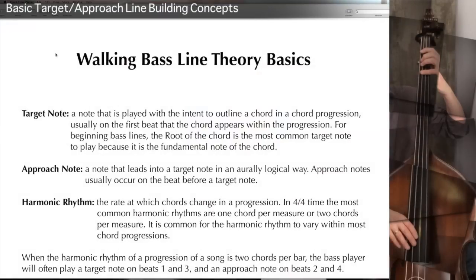A target note is a note played with the intent to outline a chord in a chord progression, usually on the first beat that the chord appears within the progression. For beginning bass lines, the root of the chord is the most common target note to play because it's the fundamental note of the chord. An approach note is a note that leads into the target note in an aurally logical way. Approach notes usually occur on the beat before a target note. The term harmonic rhythm refers to the rate at which chords change in a progression.